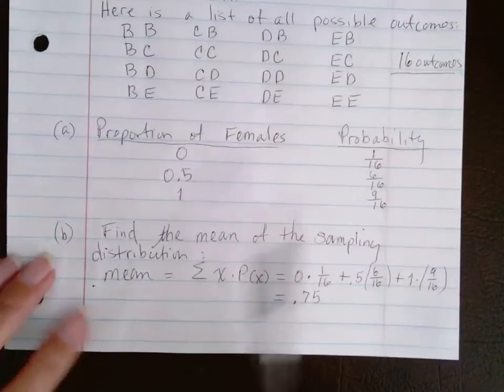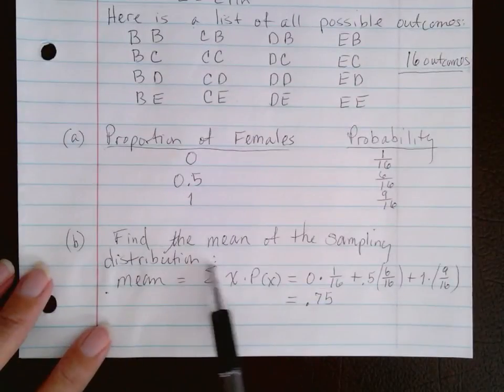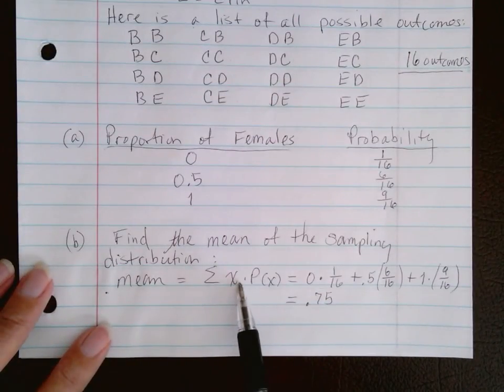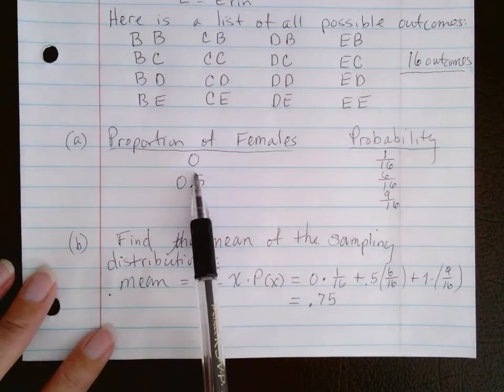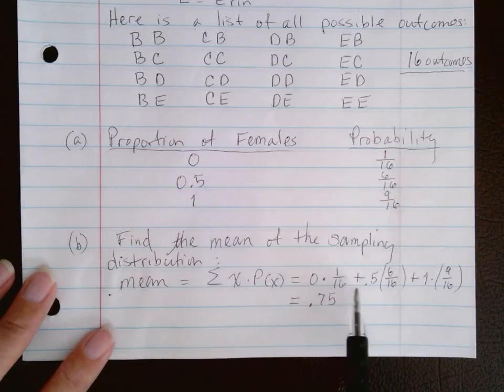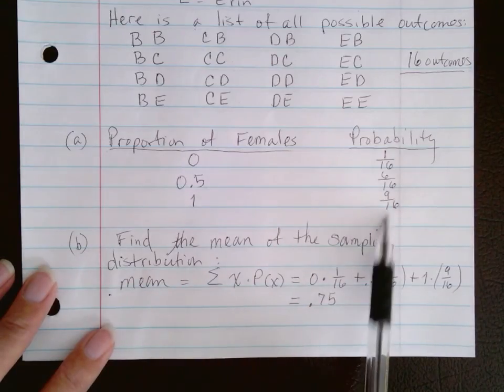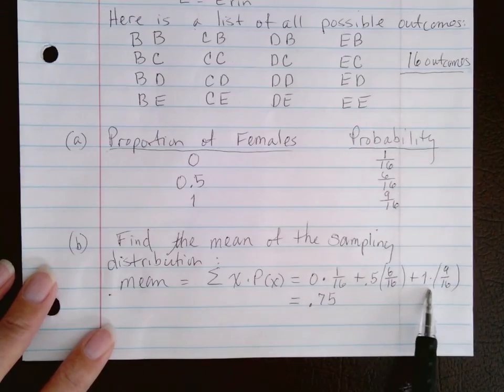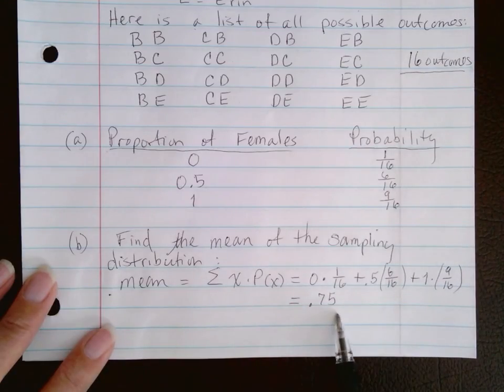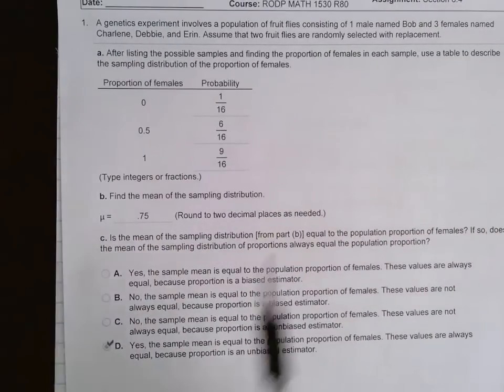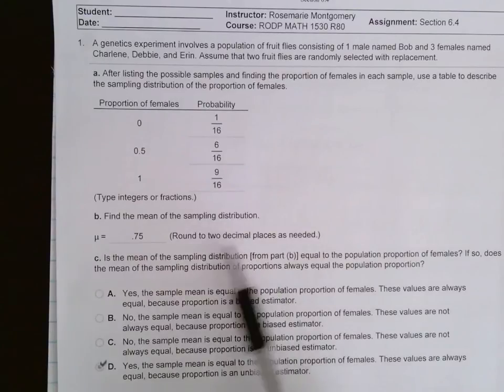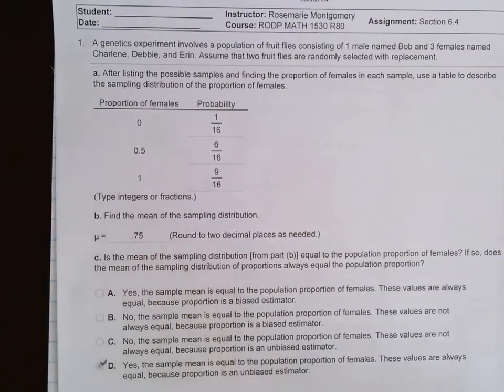Now the last part of this is finding the mean. To do this, we take the X, which is the proportion of females, and multiply it by its probability. So we do zero times one-sixteenth, plus 0.5 times six-sixteenths, plus one times nine-sixteenths. When you do this calculation, you get 0.75, and that is how you do this type of problem. That was the mean of this sampling distribution. I hope this helps everyone.